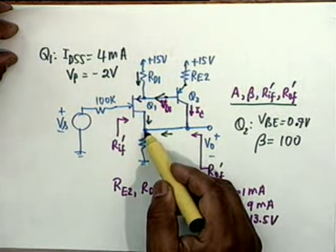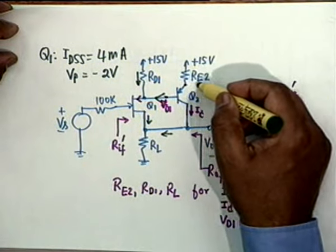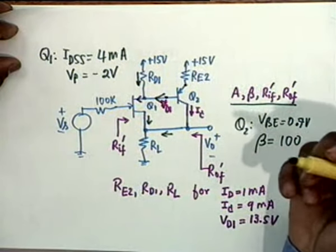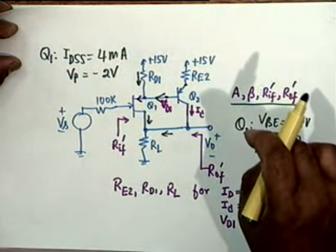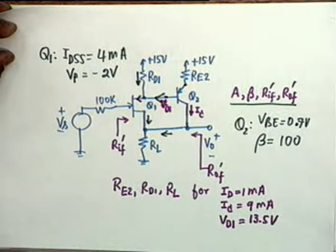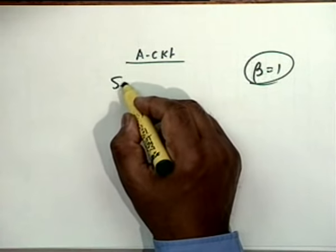It is a shunt connection because the fed-back voltage Vf is proportional to the voltage across the load — it is exactly equal to V0. Therefore beta in this case is 1, because V0 prime equals Vf prime. There is only a shunt resistance across it. So one thing we identify immediately is beta equal to 1 and the connection is series-shunt.